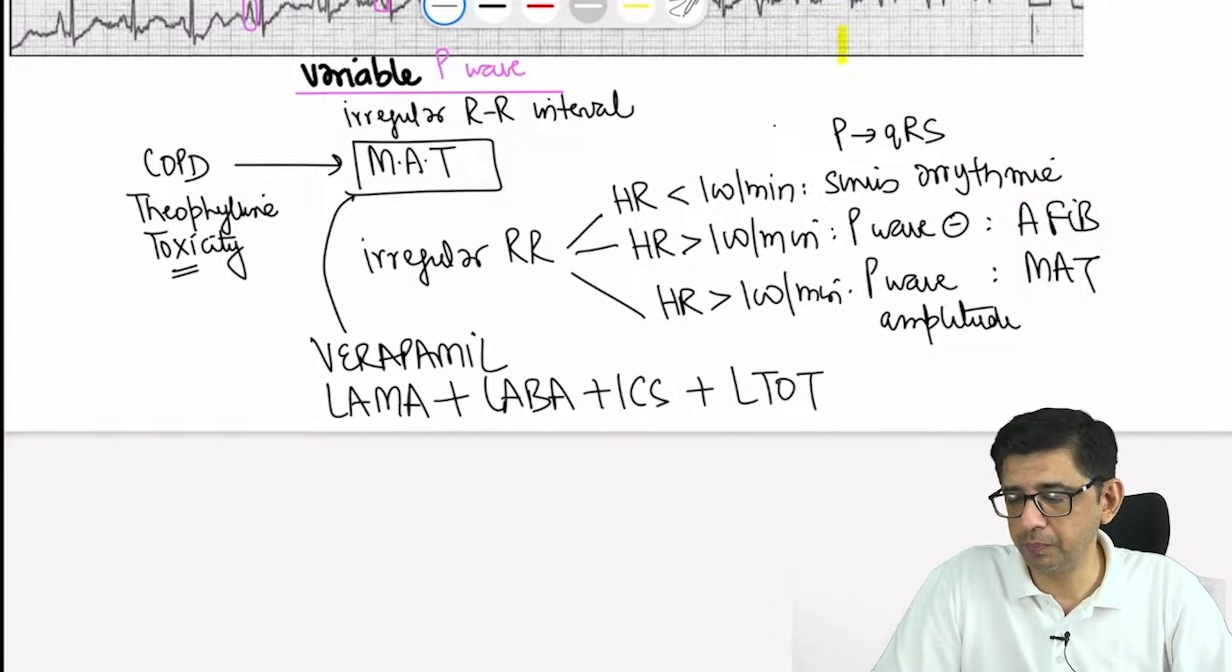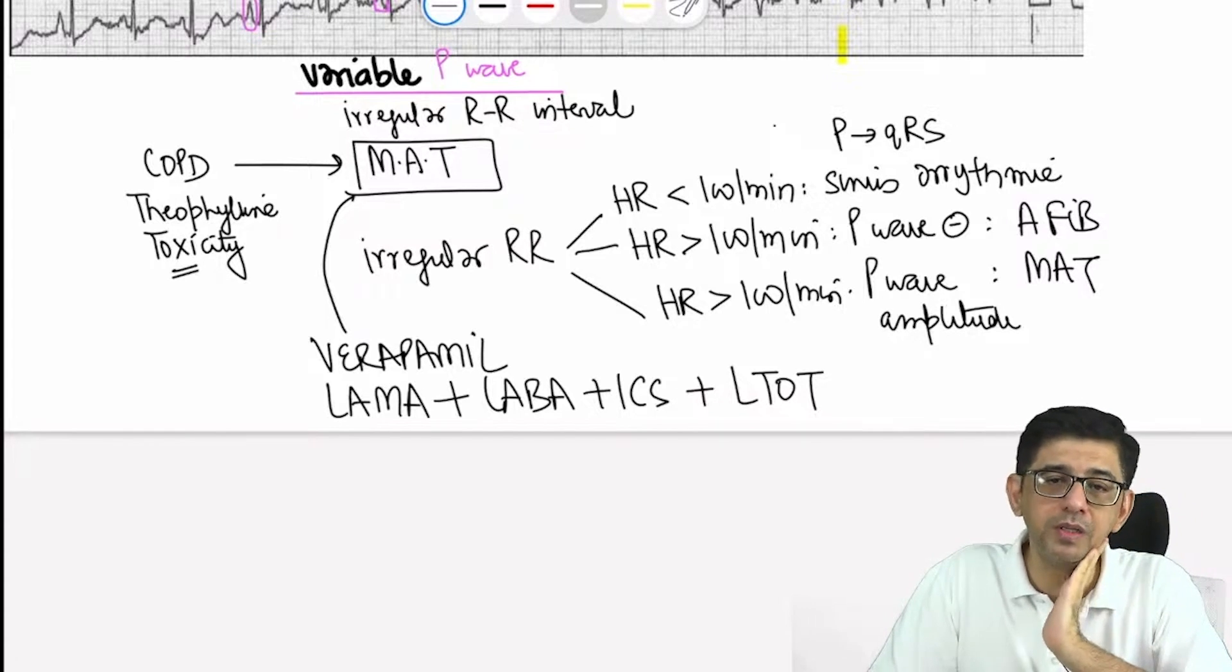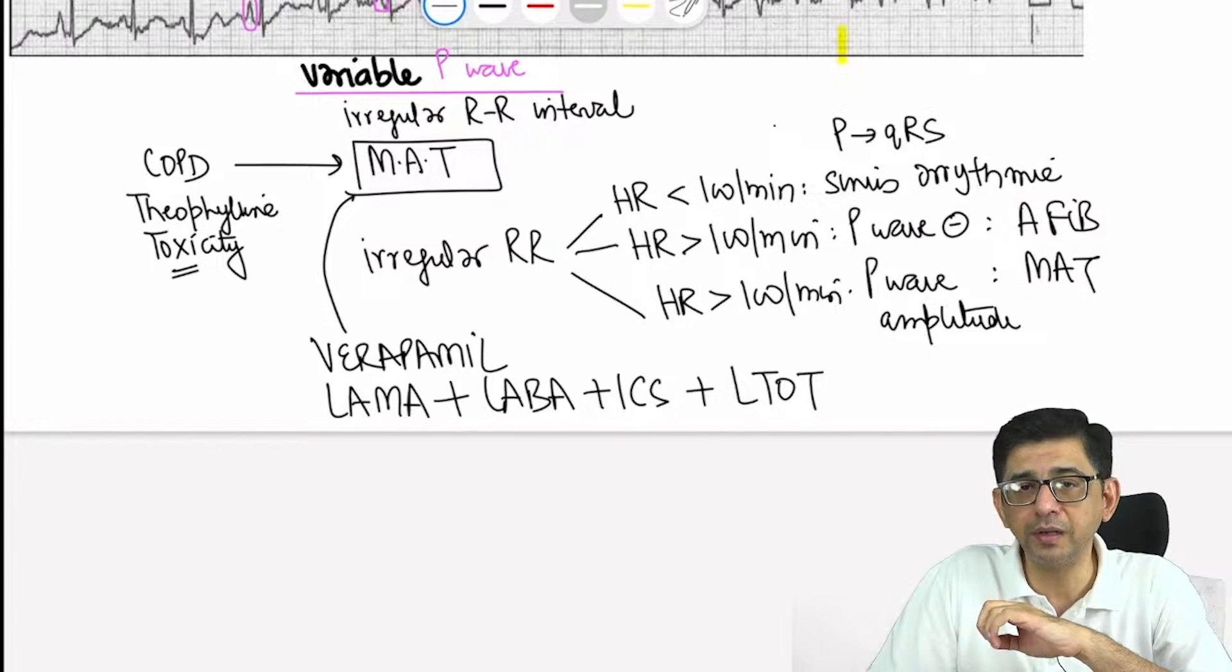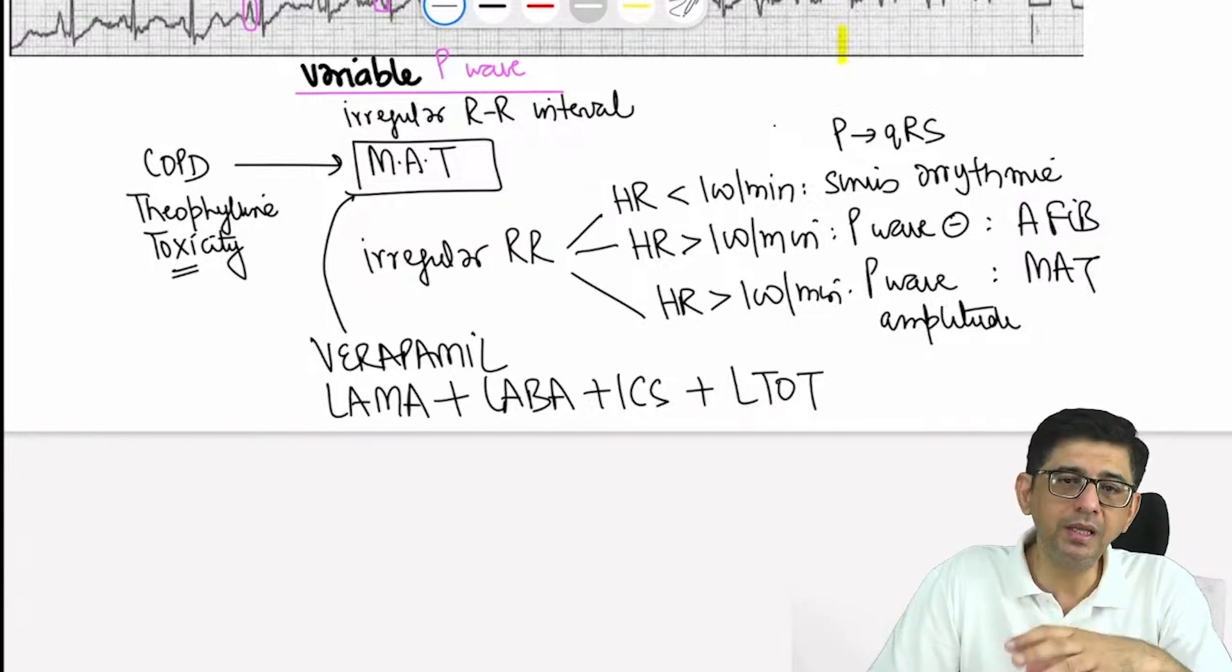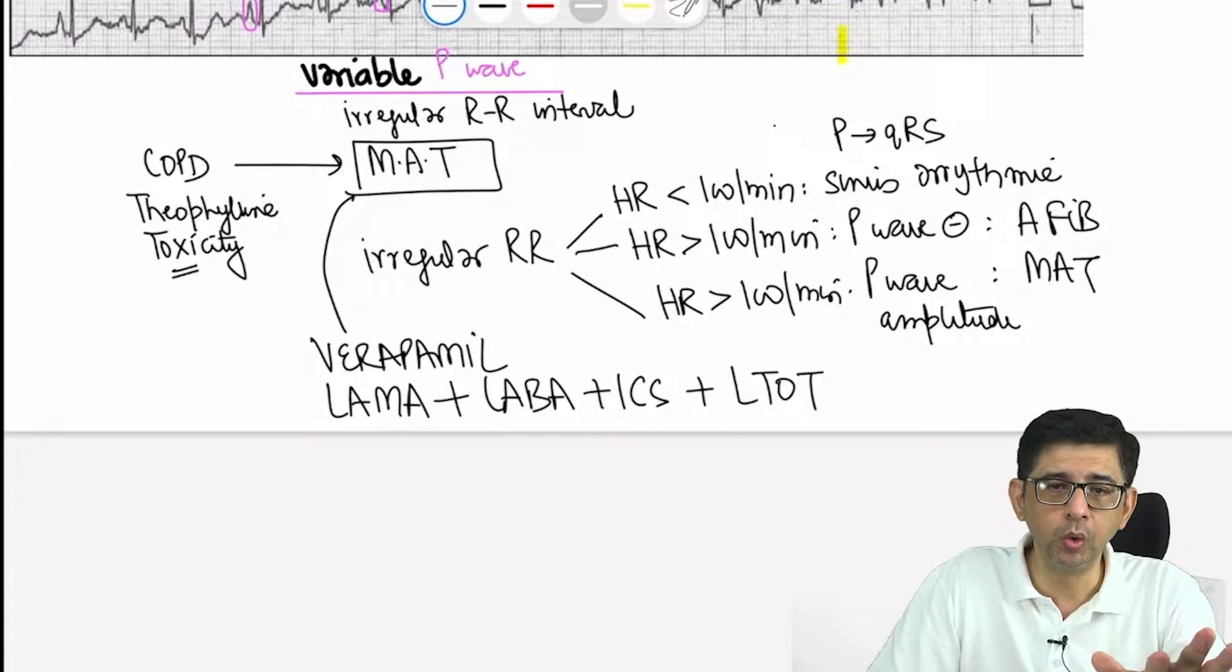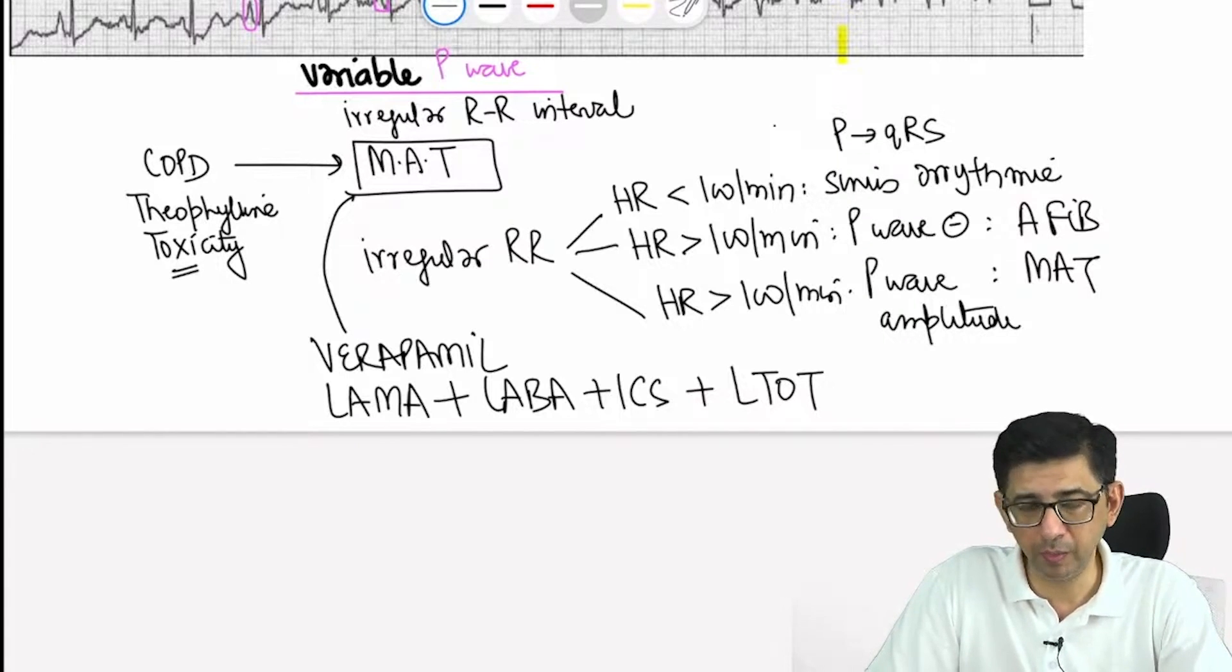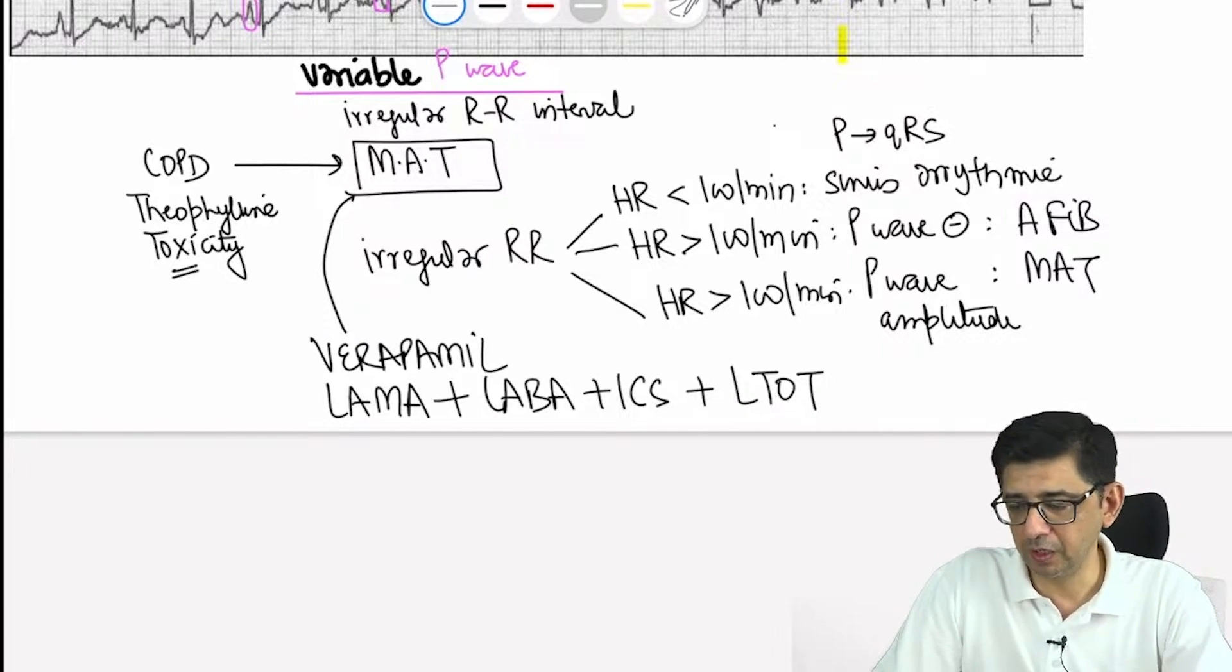Verapamil would be given, but then subsequently LAMA, LABA, inhaled corticosteroids, and LTOT. Pulmonary embolism does not have MAT. Pulmonary embolism is an emergency event causing S1 Q3 T3 pattern—deep S waves in lead 1, deep Q waves in lead 3, and T wave inversion. Any cardiac event, obviously pulmonary embolism, will cause ischemia of the right side of the heart so it can trigger multifocal atrial tachycardia. But is MAT diagnostic of pulmonary embolism? No, it's S1 Q3 T3 that's diagnostic.